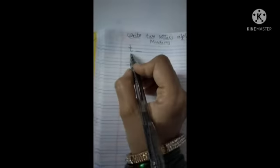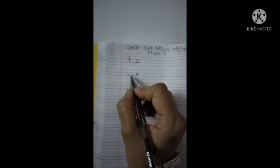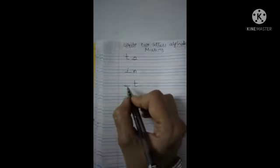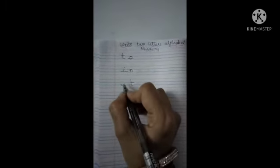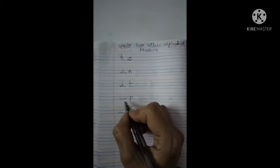So children, after T what will come? T-O: 'to'. Before N what will come? I-N: 'in'. Before T what will come? I-T: 'it'.